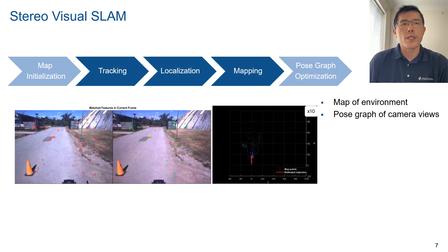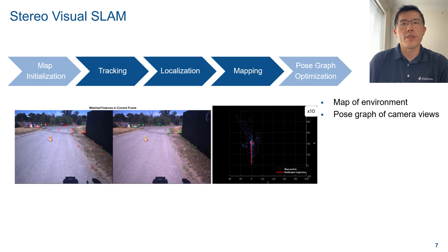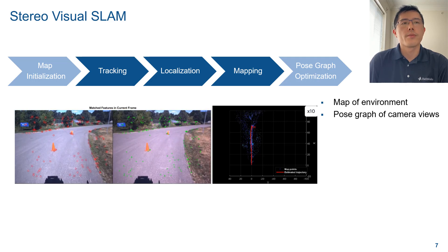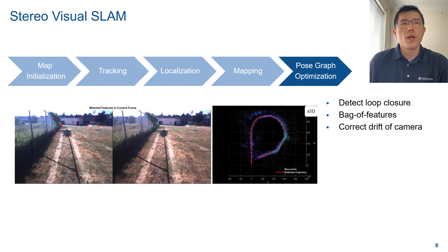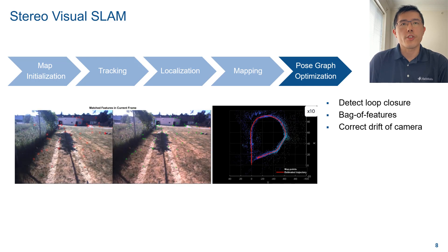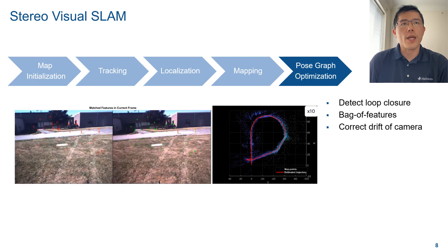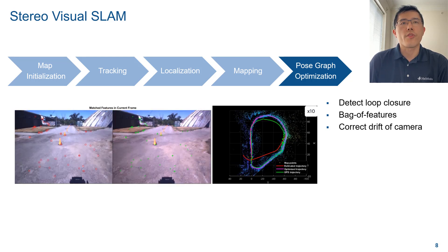Now, repeat the process for each new frame until you obtain a map of the environment and the pose graph of camera views. The pipeline terminates when loop closure is detected — that is, when the camera returns to a place that has been visited before. Once you find loop closure using the bag-of-features approach, you can optimize the pose graph to reduce the drift.